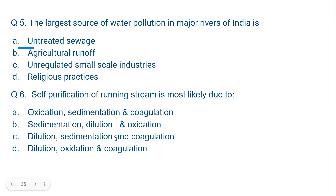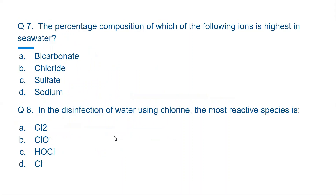Question 7: The percentage composition of which of the following ions is highest in seawater? Options include sodium, sodium chloride, sodium carbonate, sodium bicarbonate — it could be any of these. This is a very easy question.